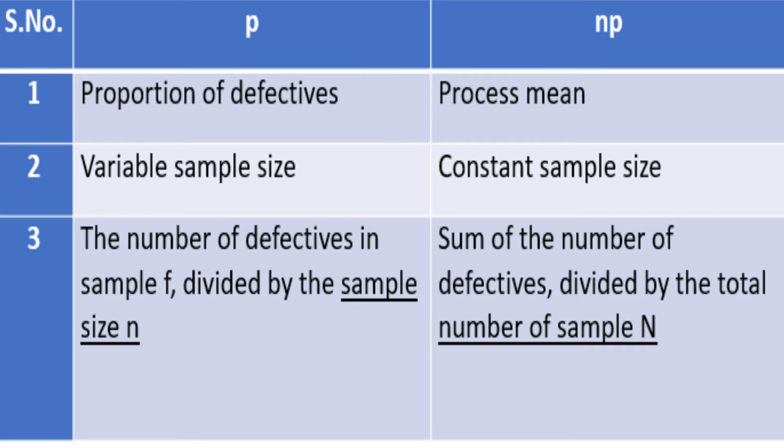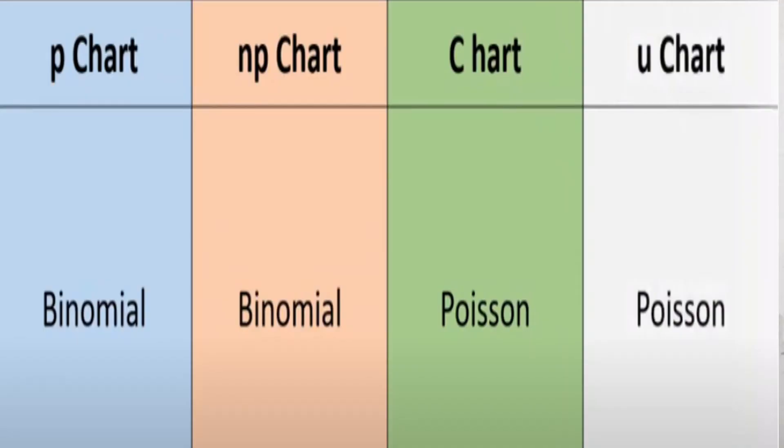When we talk specifically about the difference between P, NP and C, U charts: when we talk about P and NP chart, we are using binomial distribution. When we talk about C and U chart, we are talking about Poisson distribution.